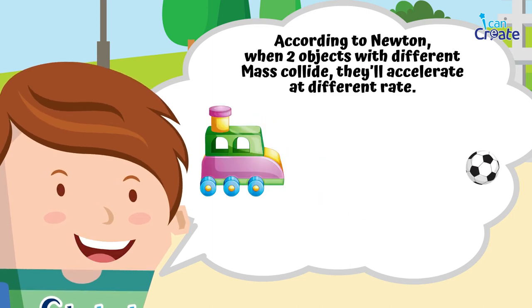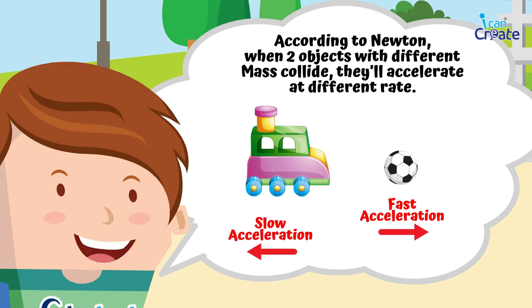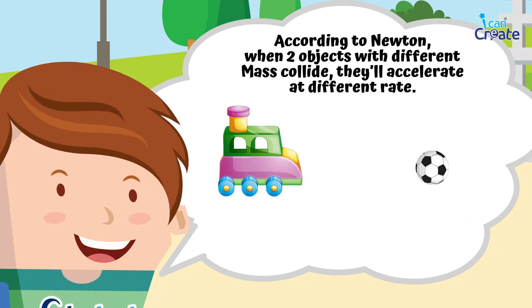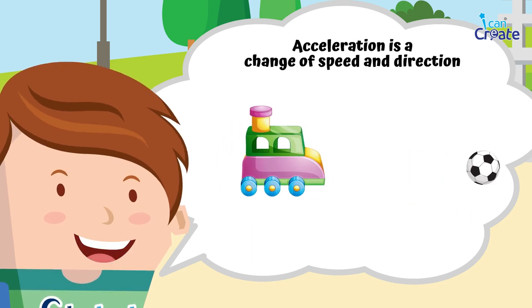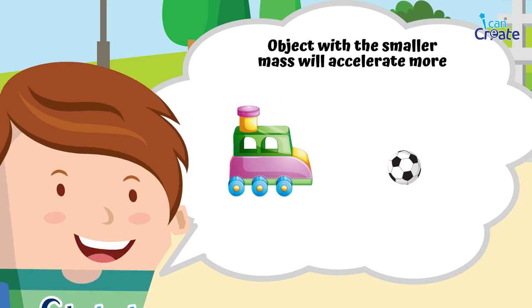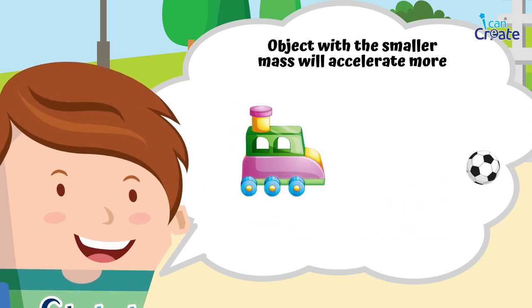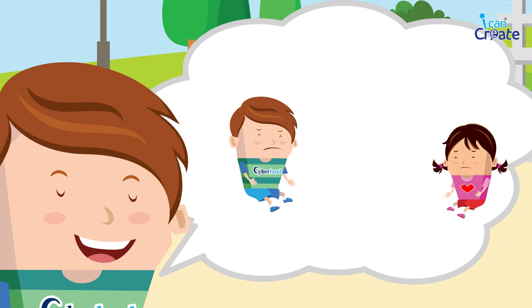According to Newton, when two objects with different mass collide, they'll accelerate at different rates. Acceleration is a change of speed and direction. The object with the smaller mass will accelerate more. That's why you got knocked further away.